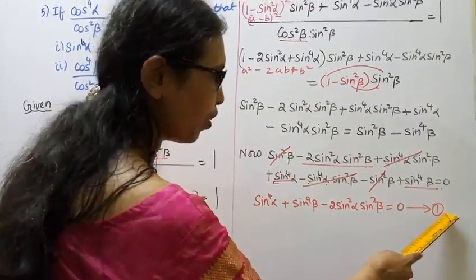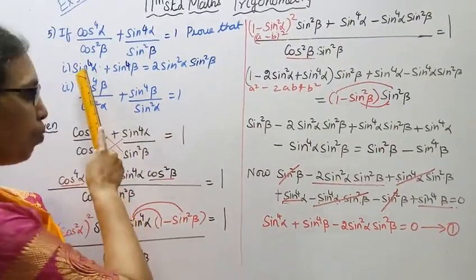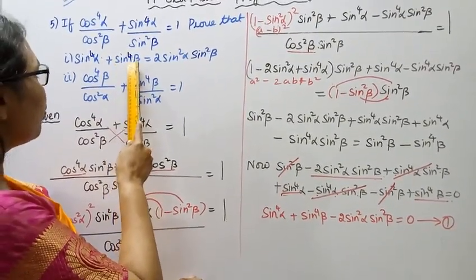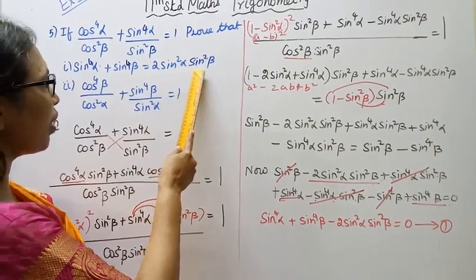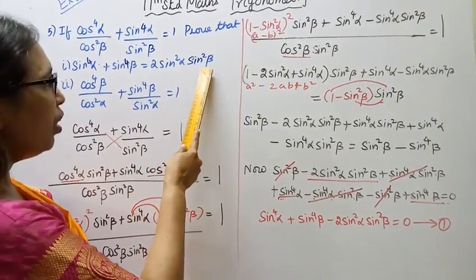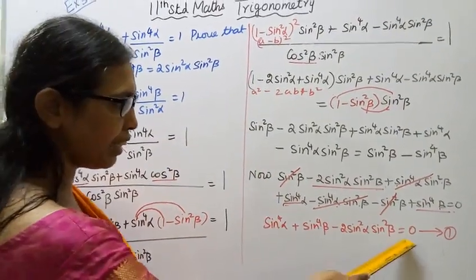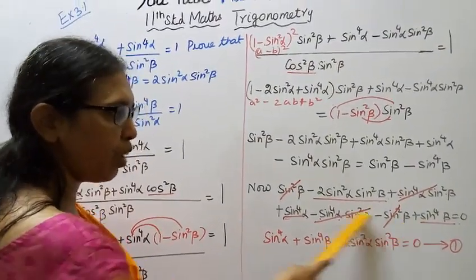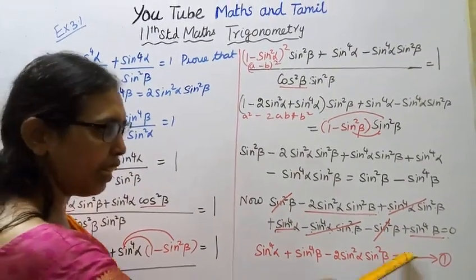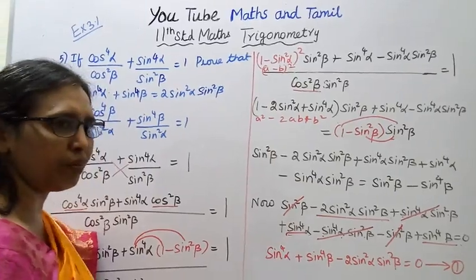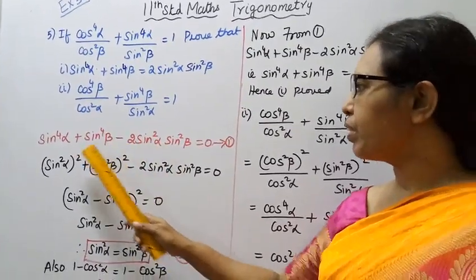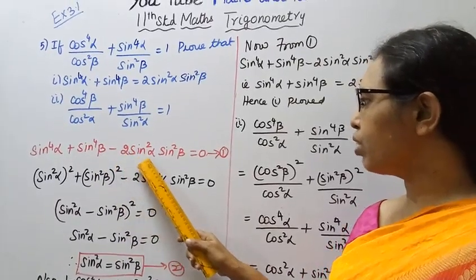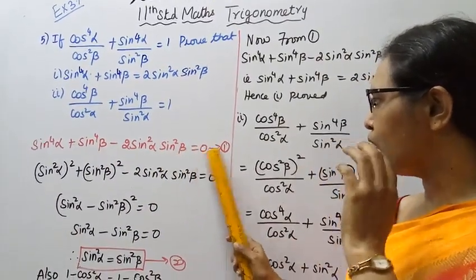We have established the first subdivision: sin power 4 alpha plus sin power 4 beta equal to 2 sin square alpha sin square beta. From this, sin power 4 alpha plus sin power 4 beta minus 2 sin square alpha sin square beta equal to 0.